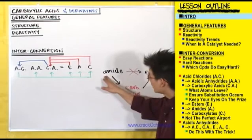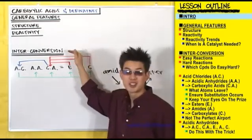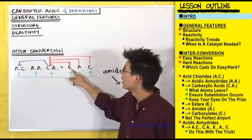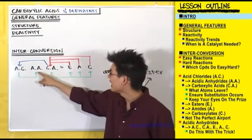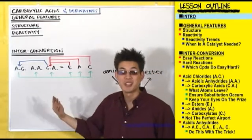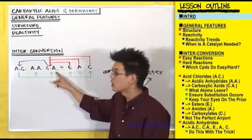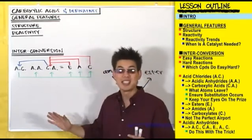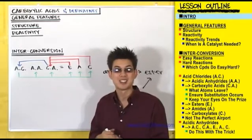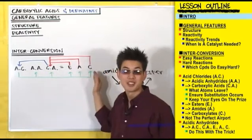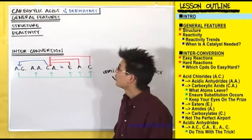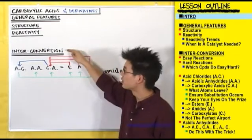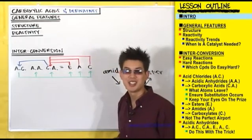This process of going from one compound through a carboxylic acid to another type of compound is known as interconversion. I drew up a diagram showing that carboxylic acids can be used to interconvert between all these different types of carboxylic acid derivatives: acid chlorides, acid anhydrides, esters, amides, and carboxylates. These are all carboxylic acid derivatives, meaning they can all be made from a carboxylic acid, and you can also make a carboxylic acid from all of them. The key point is that carboxylic acids can interconvert between many different types of compounds. How this lesson will lay out: we'll first cover general features — structure and reactivity — and then get to interconversion.